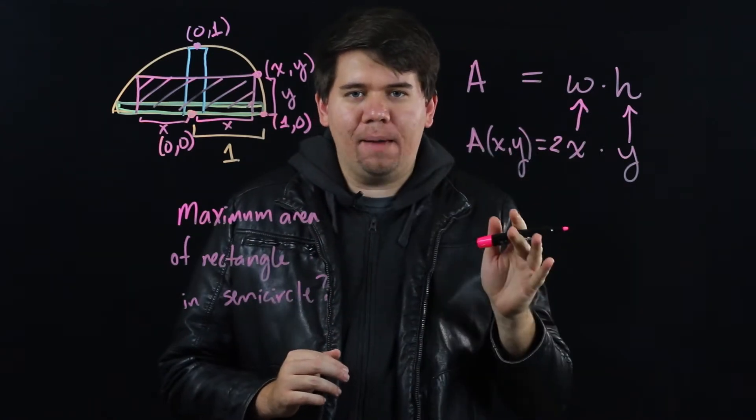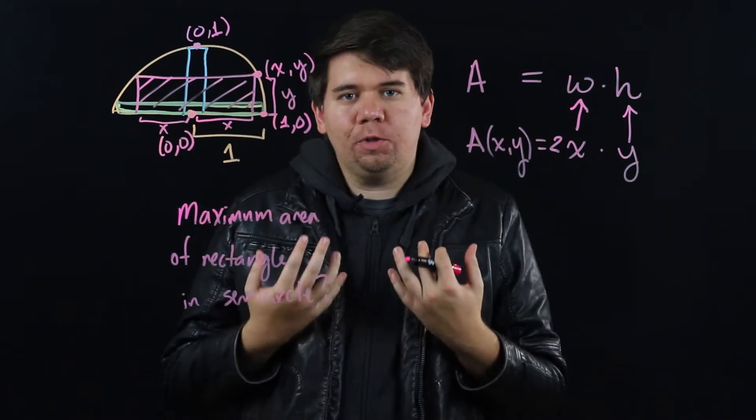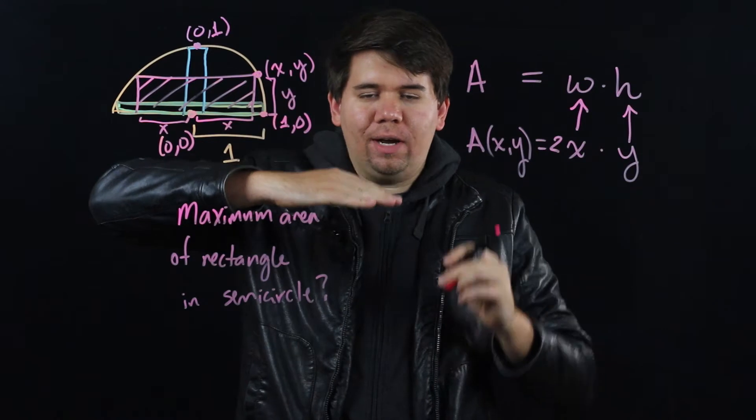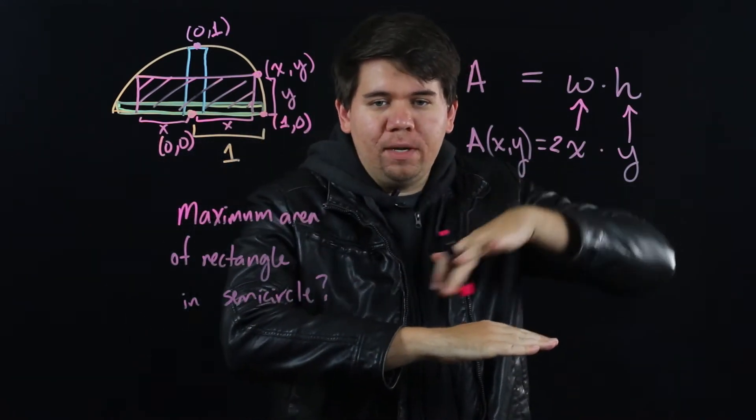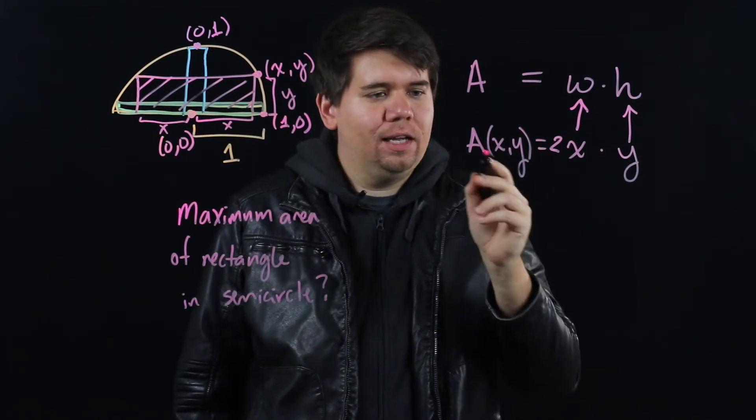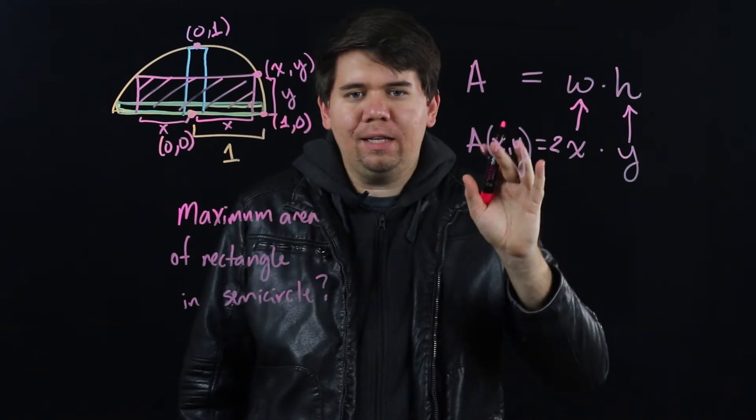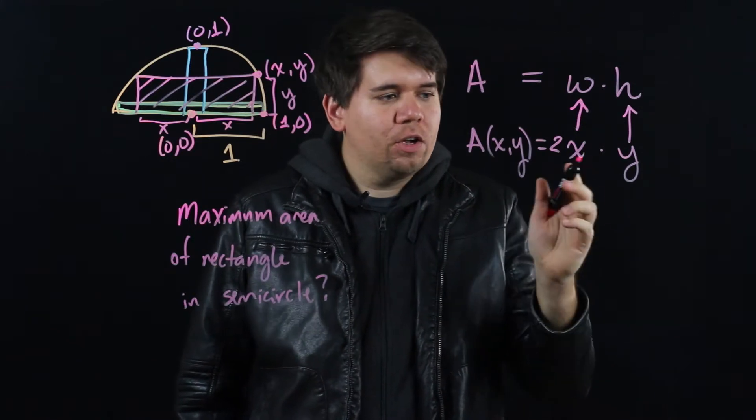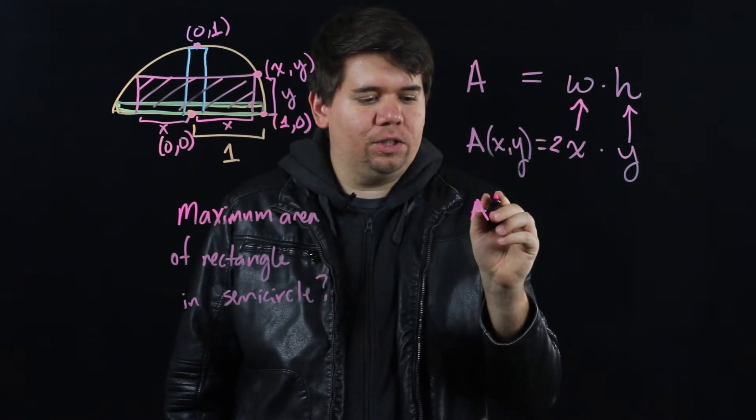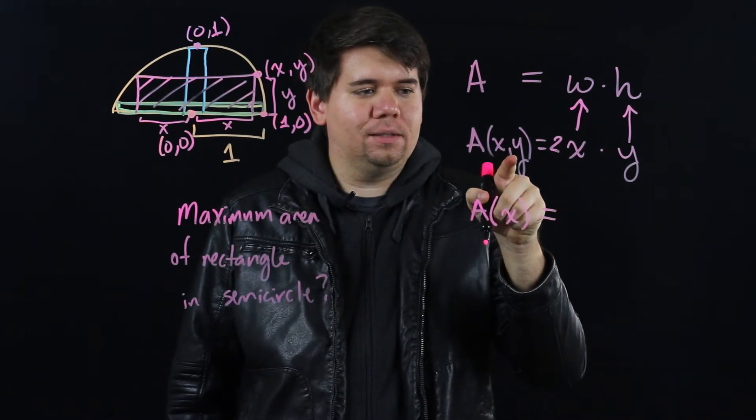Remember, maximums happen when you have a critical value, when your derivative is 0. So our goal should be trying to take a derivative of this function and seeing when it is 0. But how are we going to take a derivative of something like this? It's a function of two variables, x and y. Before we can take a derivative, we first have to get rid of one of the variables. I need to simplify this so it's just a function of just one variable, say just x, instead of being both a function of x and y.